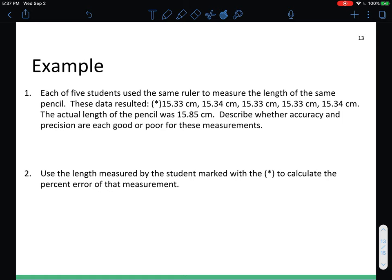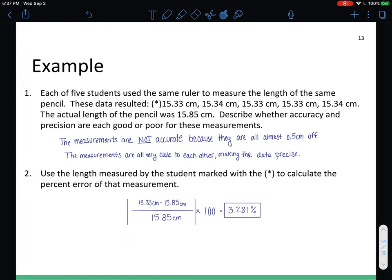Let's check your answers. The measurements are not accurate because they are almost a half a centimeter off from what the actual length of the pencil is. However, the students were very precise in their measurements because they're all very close together if not the same. And the percent error would be 3.281%, and you would include all of those sig figs because there are four significant figures in all of the measurements. And remember that it is not a negative percentage, it can't be because of those absolute value bars.